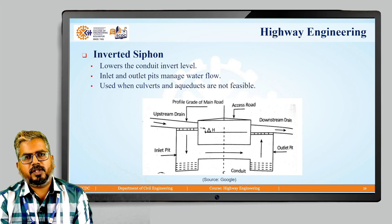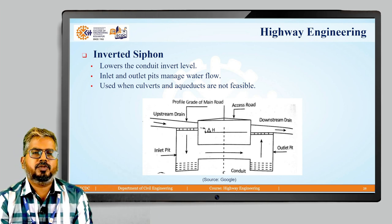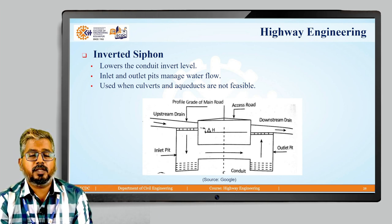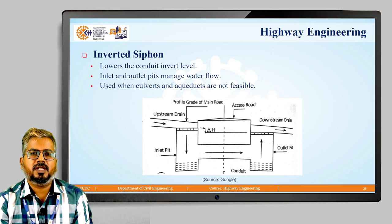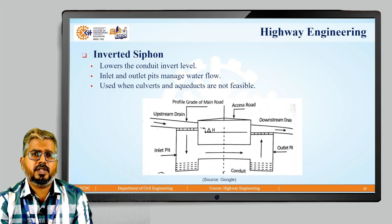Then we have the inverted siphon. It lowers the conduit invert level, and the inlet and outlet pipes manage the water flow, as clearly shown in the figure with the inlet pit and outlet pit. It is basically used when both culverts and aqueducts are not feasible.